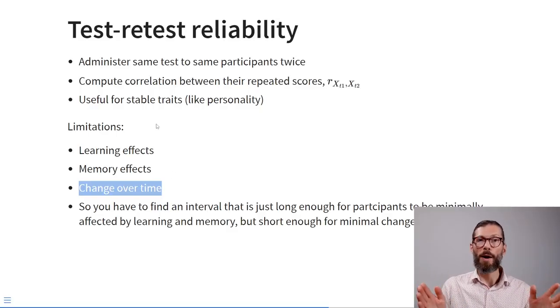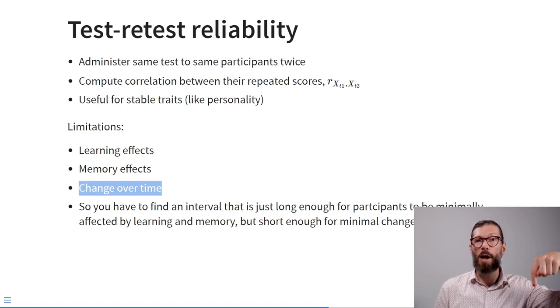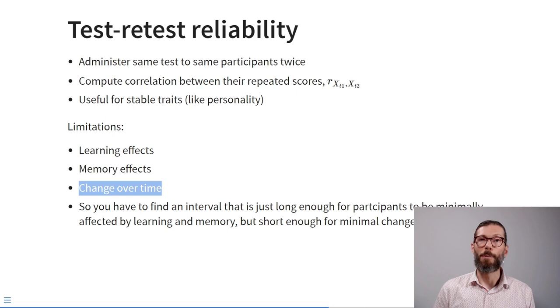The opposite problem also exists: if you take a long break between measurements, the underlying true score may have changed over time, causing test-retest reliability to go down — not because the questionnaire is unreliable, but because participants are changing. The trick is to find an interval long enough to minimize learning and memory effects but short enough that minimal change in the latent construct occurs.